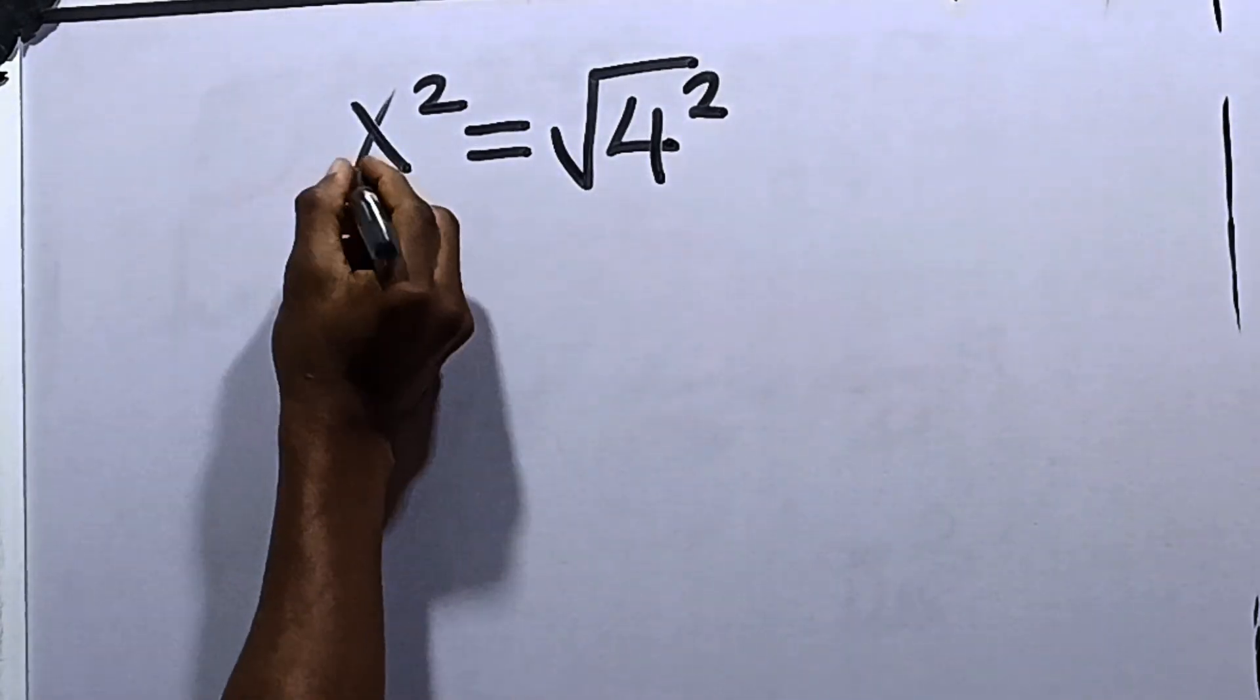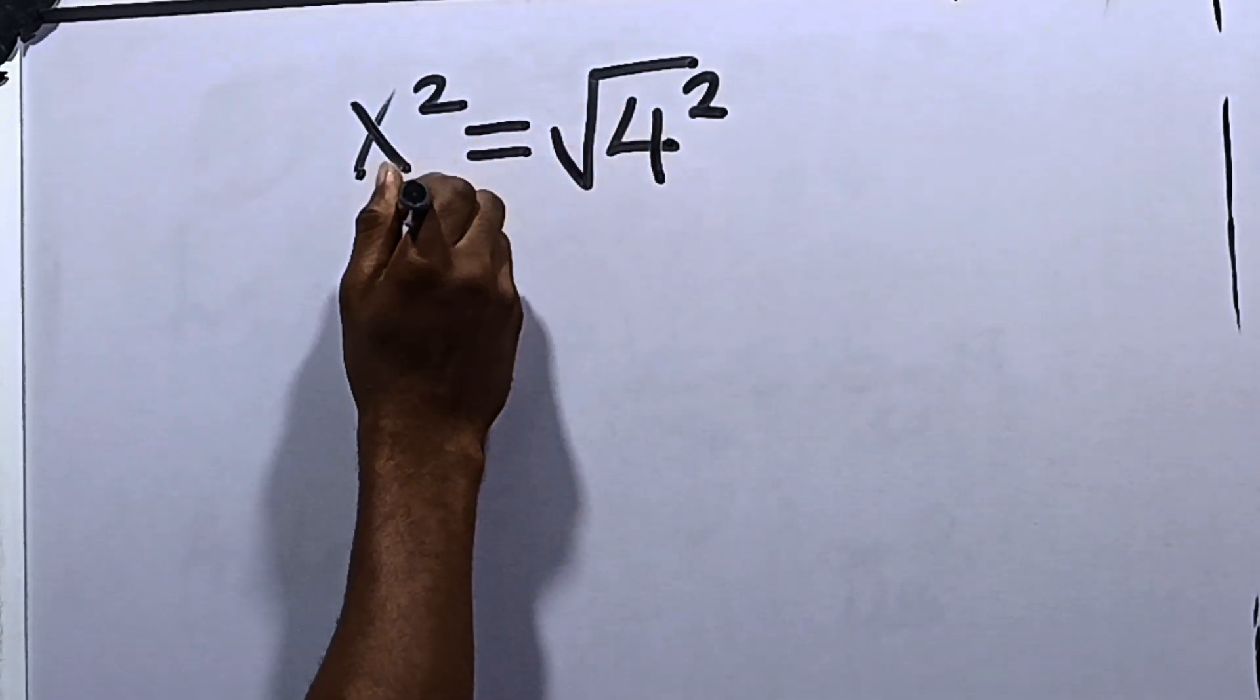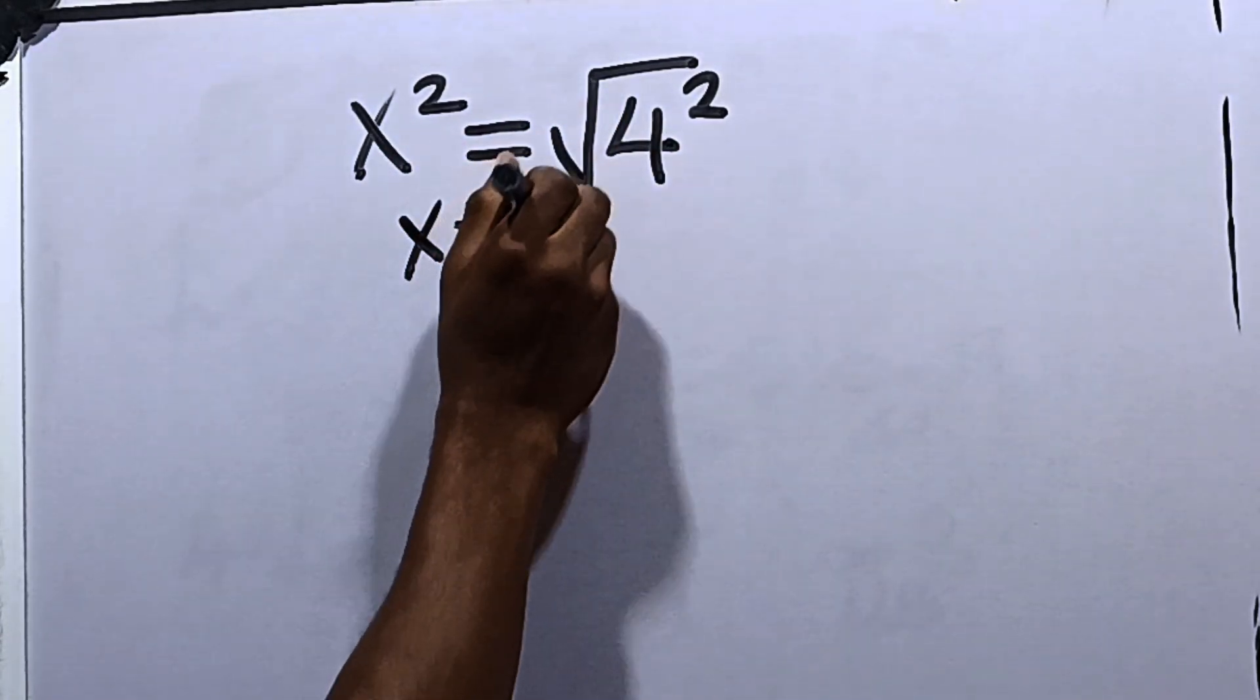Let's solve this together. It states x squared is equal to root of 4 squared. We are going to find the values of x in this equation.